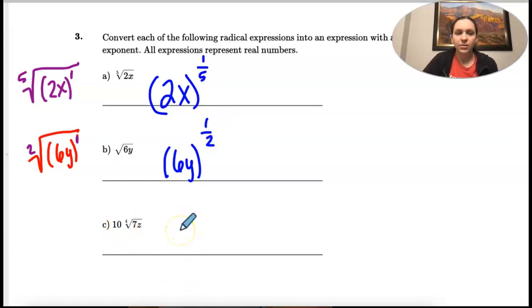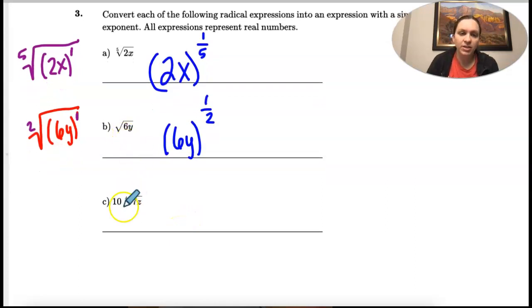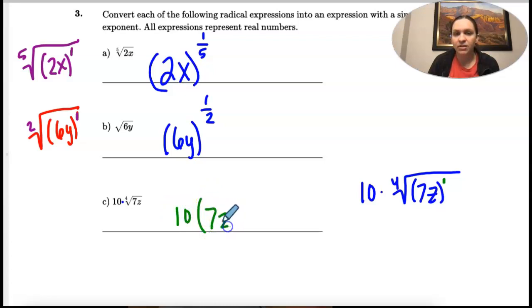All right, on this one we have a lot more numbers. Remember this is 10 times the 4th root, and then 7z stay together, and those are to the first power. So when I write it, I'm going to do the same thing I did here. I'm going to do 10, and then times 7z, and then my exponent only goes to the 7z, and it's to the 1 fourth because the 1 and then the 4 make up the fraction.